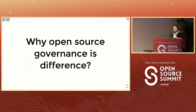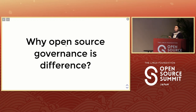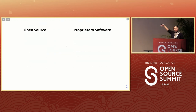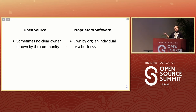Why is open source governance different? If you've worked in a company, you're familiar with that kind of governance — you have a boss, they have a boss, and at the end there's a CEO or board of directors. Open source is different. Comparing it to proprietary software: proprietary is usually commercial software owned by an individual, a business, or an organization. If they're not making a profit, they're just an organization.